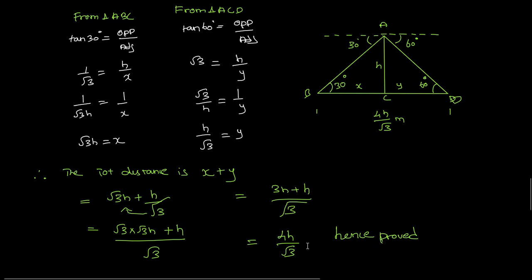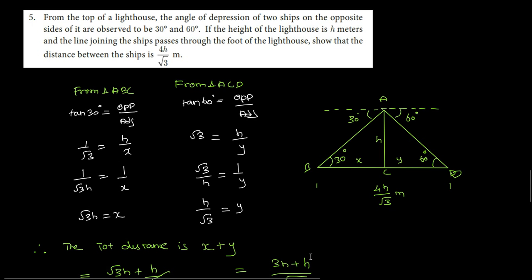We have proved the distance between the ships is 4H by root 3. So this is question number 5 in XI 6.3. First find the small triangle BC side, same way CD, then add them together.